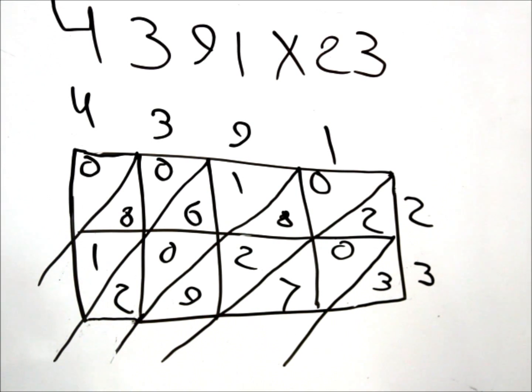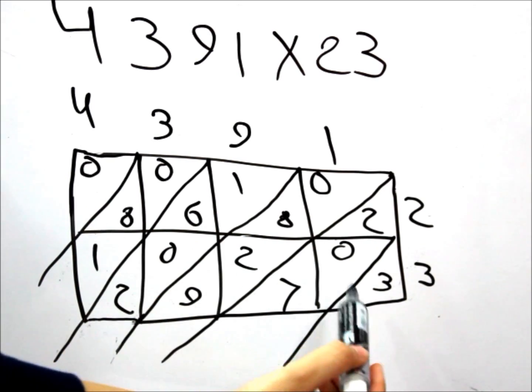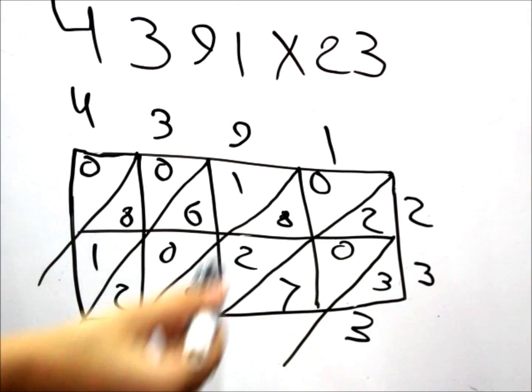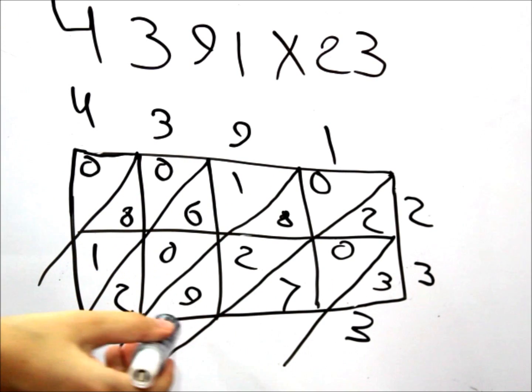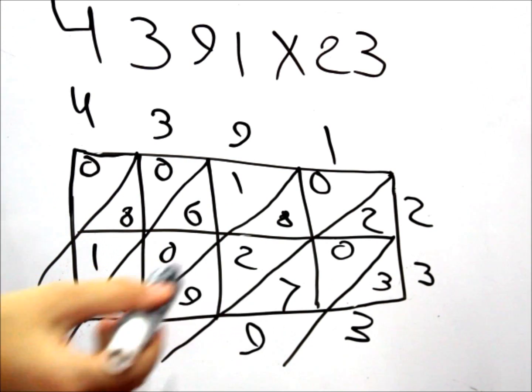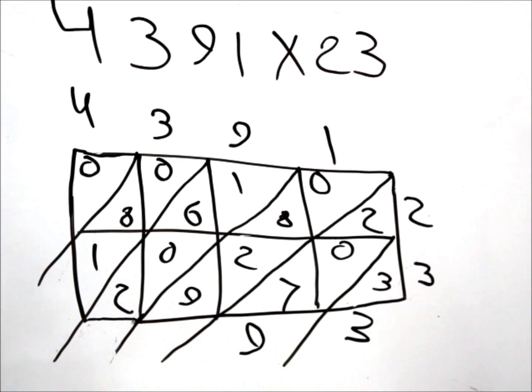And now, we're going to do the same thing again, and that would be adding up the diagonal columns. For the first column, we have the 3 only, so it's going to be 3. For the second column, we have a 2 and a 7, and that would be 9. And for the next column, we have an 8 and a 2 and a 9, and that would be 19. We're going to place the 9 over here and take the 1 for the next diagonal column.